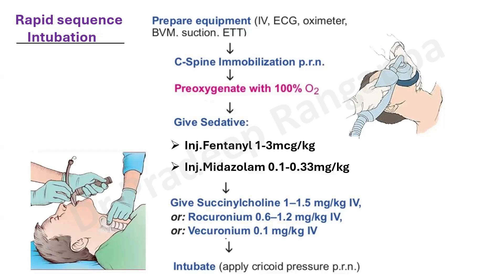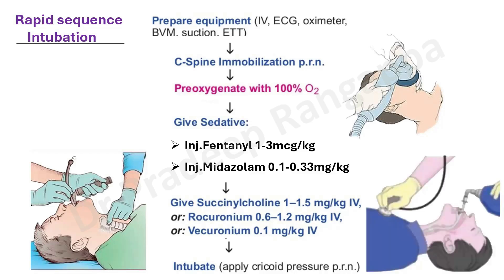There are studies to ascertain whether cricoid pressure is really needed, which we'll discuss. Post-intubation, one needs to auscultate all zones of the lung to confirm equal air entry bilaterally. This is the typical algorithm followed.